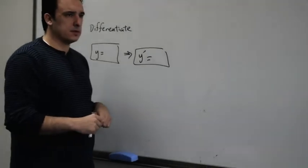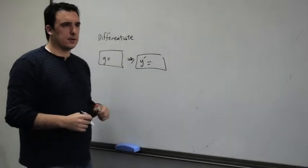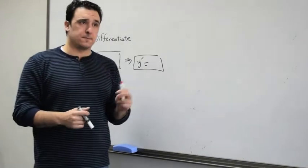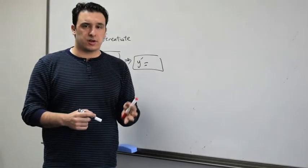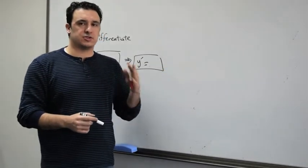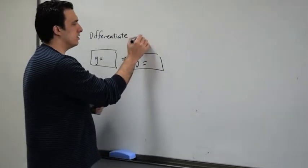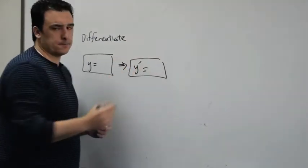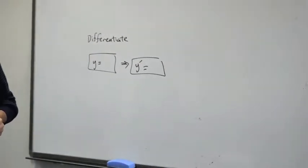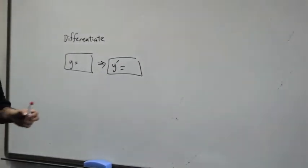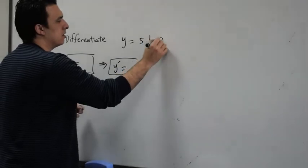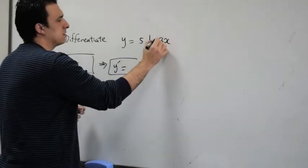In this part, we're going to talk about the differentiation of the logarithmic functions, or the natural logarithmic functions. So, differentiate y equals 5 natural log 3x.